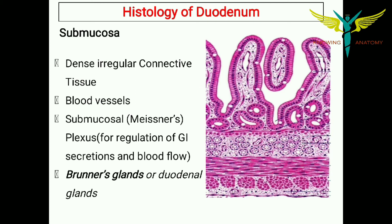Coming to the submucosa, it has dense irregular connective tissue with more blood vessels, and a plexus called Meissner's plexus or the submucosal plexus. This plexus helps in the regulation of GI secretion and blood flow. The submucosa consists of Brunner's glands, also called duodenal glands — this is the main point to remember.